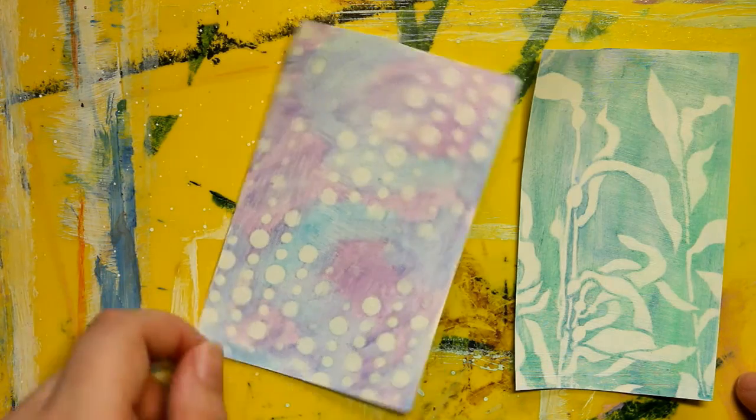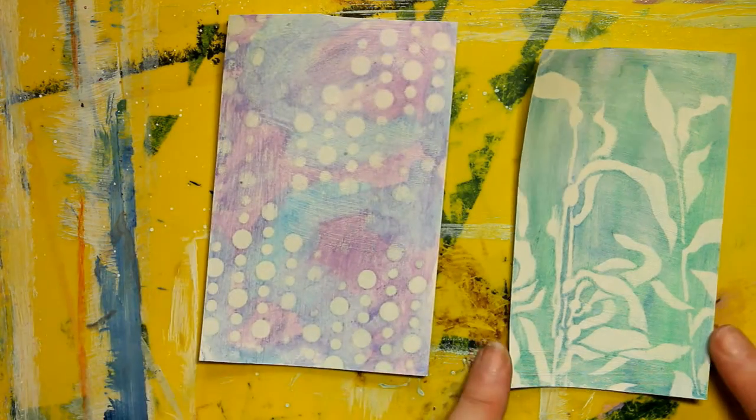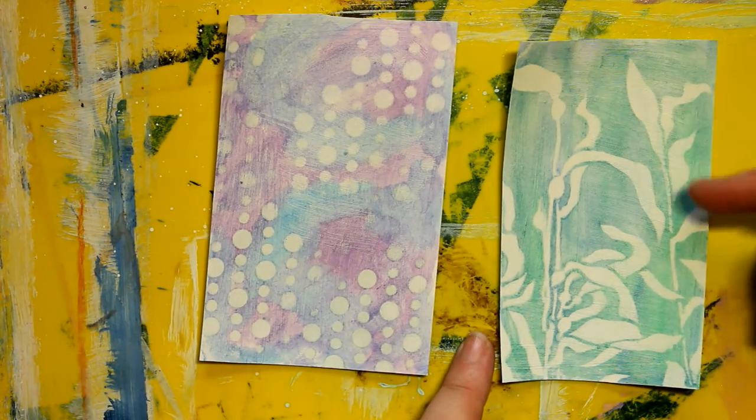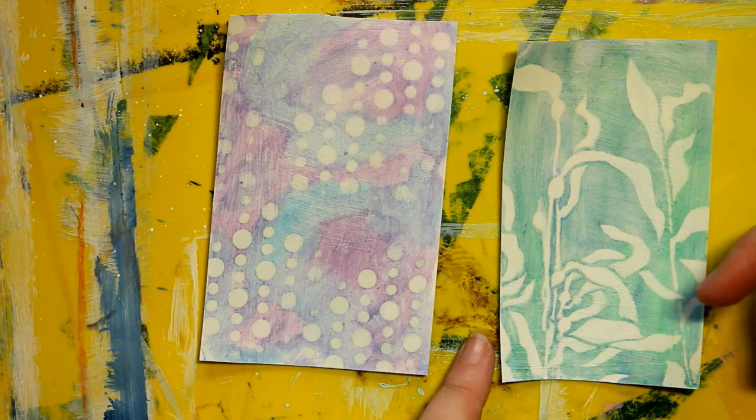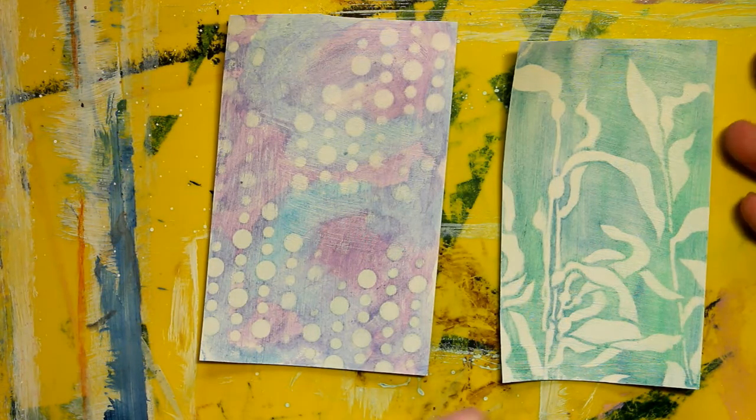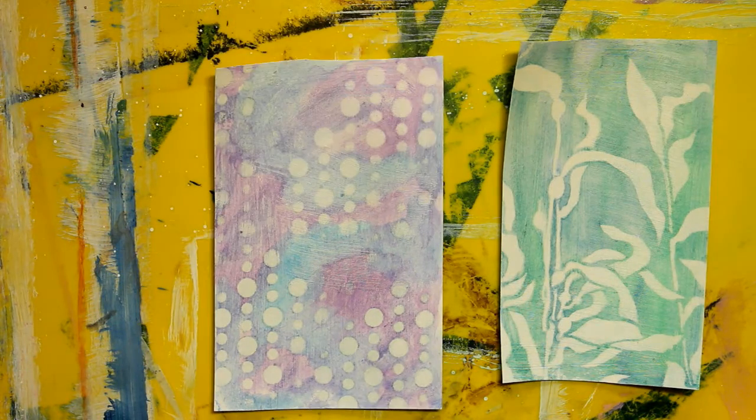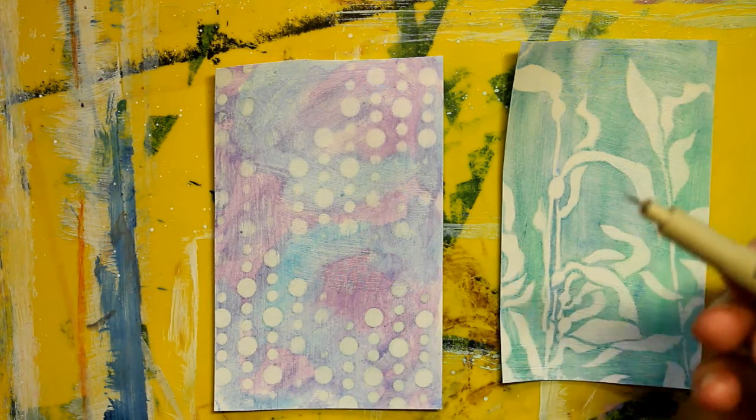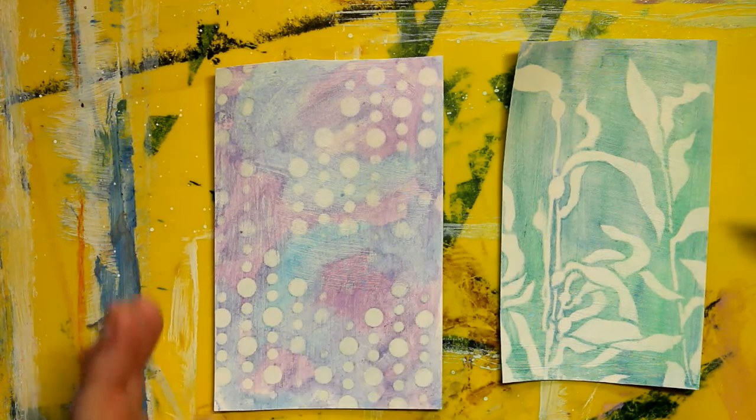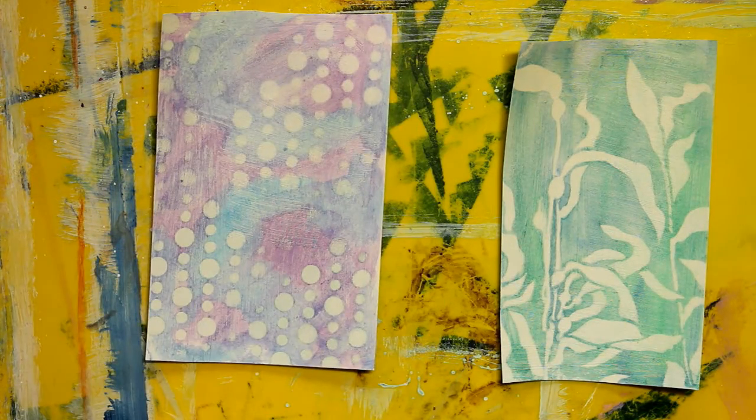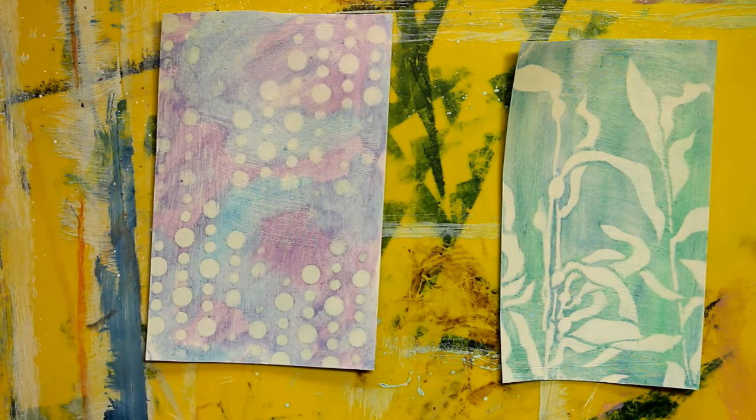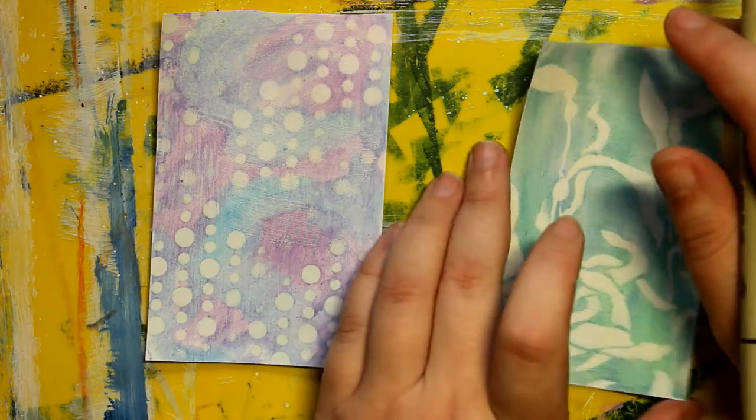And now you can do whatever you want with them. You can outline the patterns, you can add some glitter, you can distress the edges, put some doodles and quotes on it. I'm gonna take my Micron pen, for example, and granted I'm a terrible doodler, but I'll just go for it.